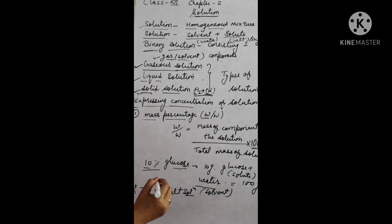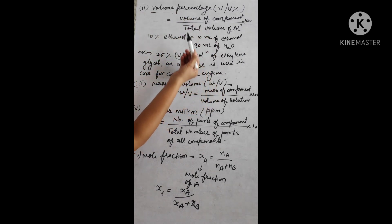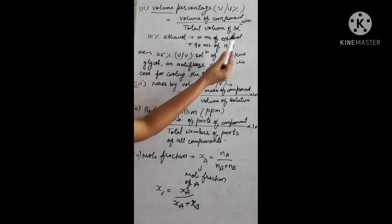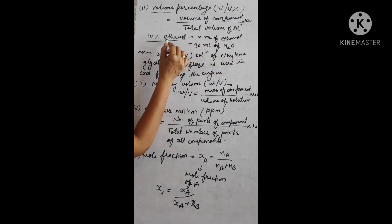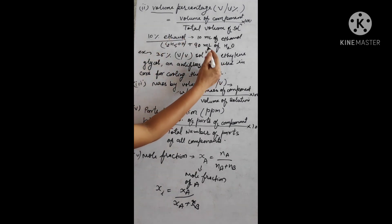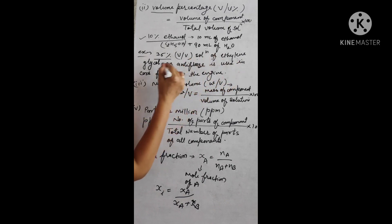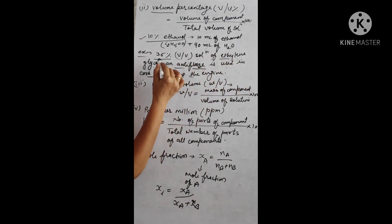The second method is volume percentage (v/v). If the solute and solvent are both liquids, we take volume in mL or litres. Volume percentage = volume of component upon total volume of solution, multiplied by 100. For example, 10 percent ethanol means 10 mL ethanol dissolved in 90 mL water. Another example: 35 percent volume by volume solution of ethylene glycol is known as antifreeze, used in car radiators for cooling the engine.